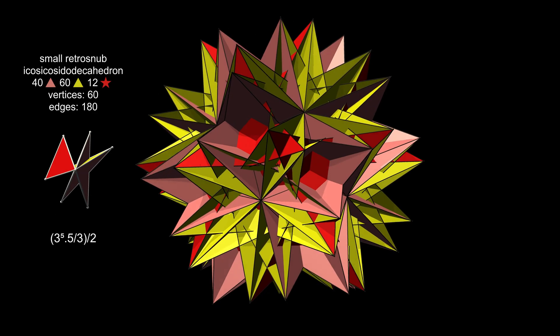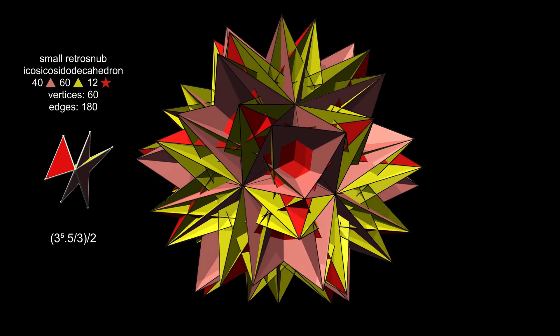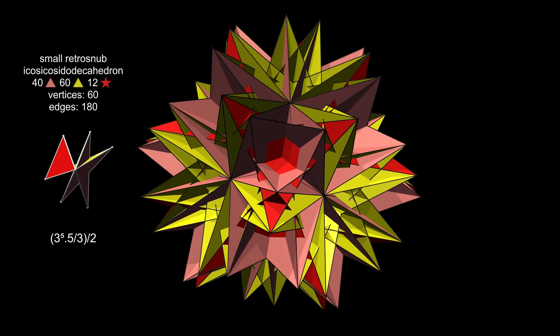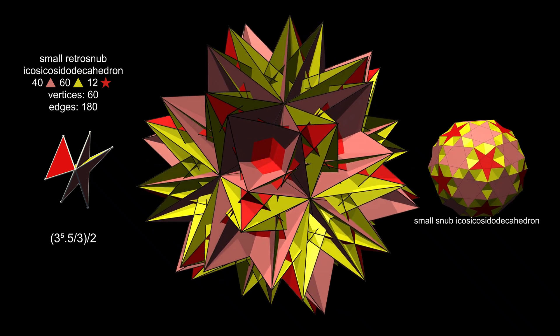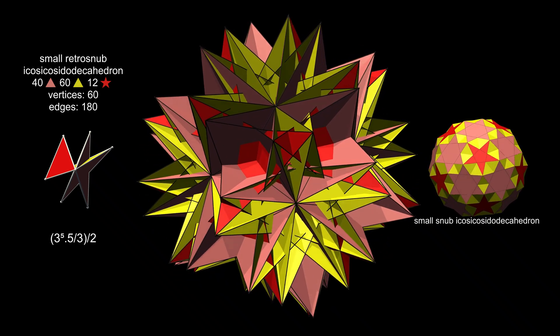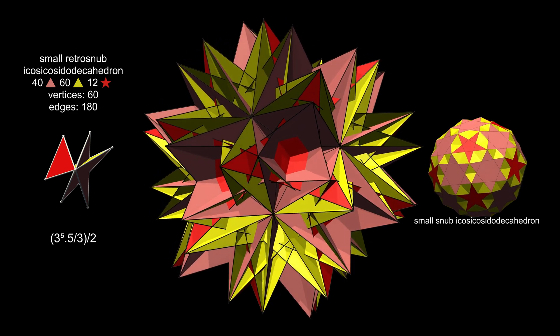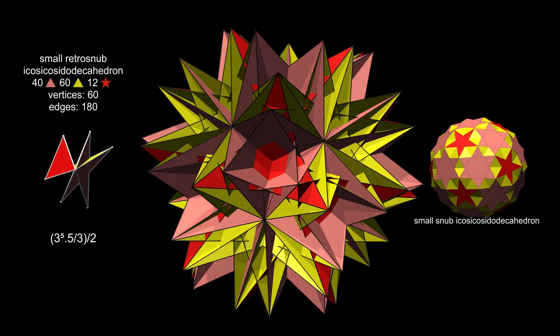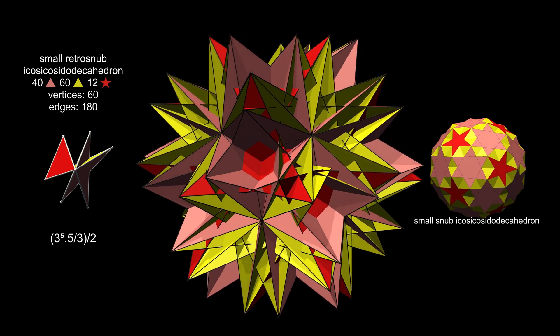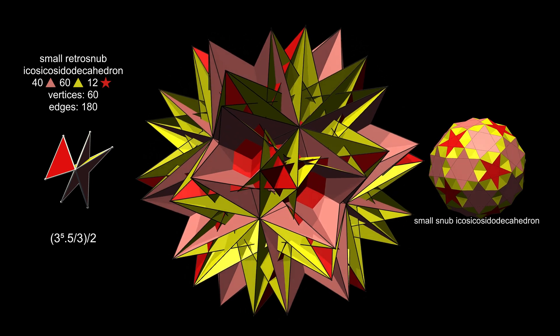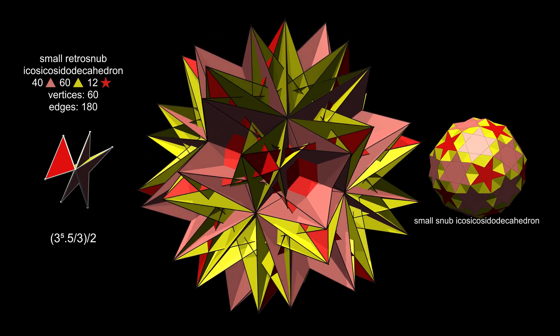The small retrosnub icosicosidodecahedron is closely related to the small snub icosicosidodecahedron we met earlier, although the external appearance of the two is very different. Both have exactly the same faces around each vertex, but in the retrosnub, the faces encircle the vertex twice, making the strange vertex figure.